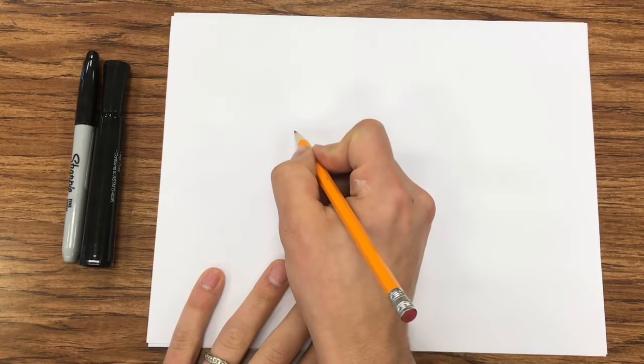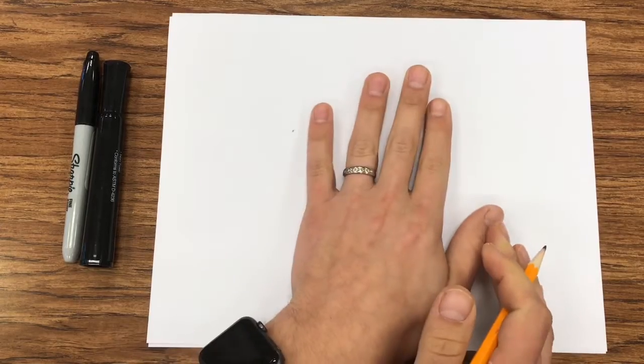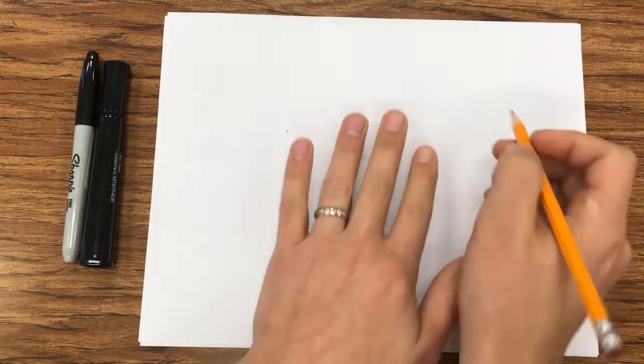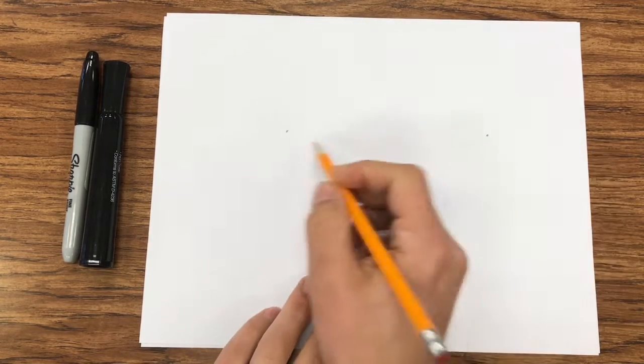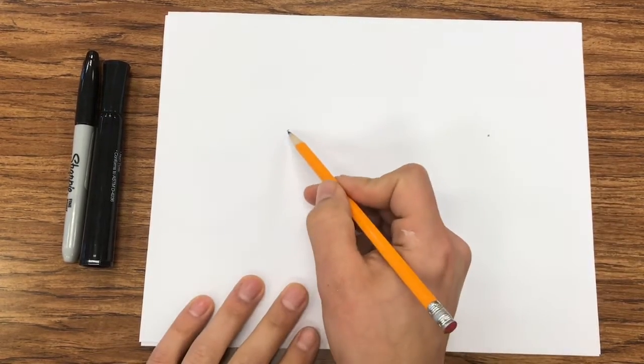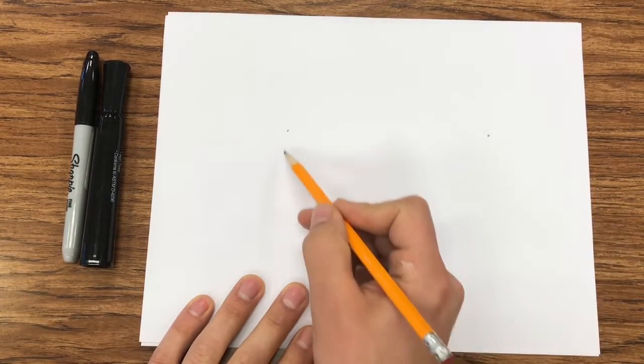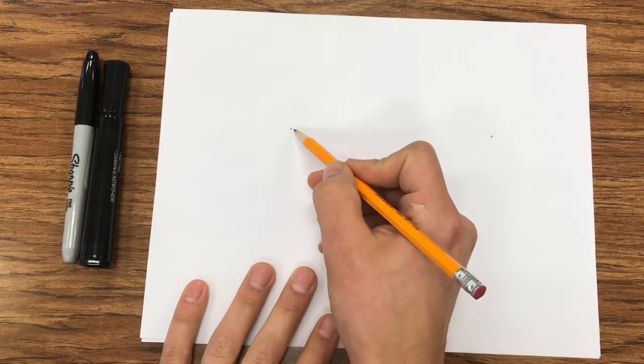So I would probably start with a dot on one side and then maybe about the size of your hand, a dot on the other side at about the same level. So it's important to know that the curve of the Nike comes back up to that same spot. If it's about as wide as your hand, I think that'll be a good space.